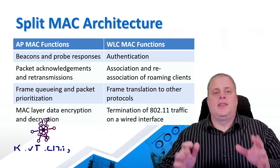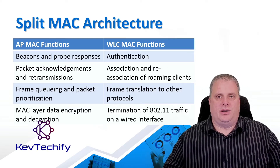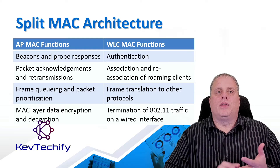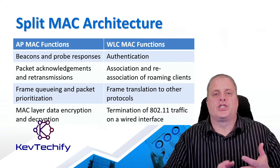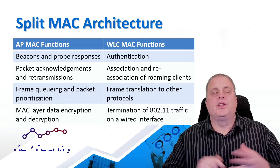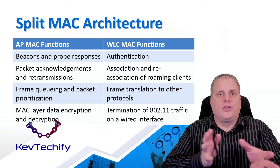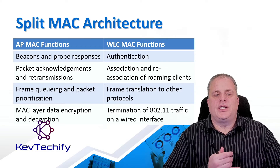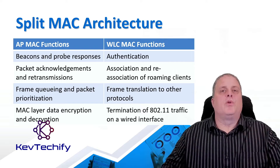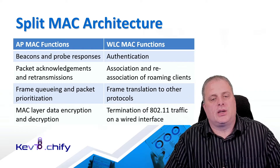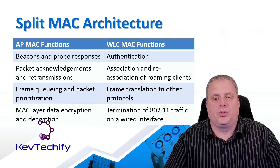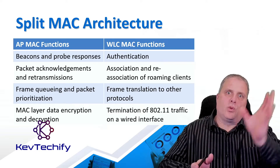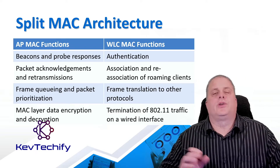The wireless LAN controller handles authentication — whether it's a passphrase, pre-shared key, or authenticating against a separate server. It handles the association and re-association of roaming clients, with centrally stored data allowing them to connect to different access points as needed. It also handles frame translation to other protocols, and it serves as the termination point for traffic on the wired network — essentially converting wireless traffic into wired traffic so it can travel across the network.